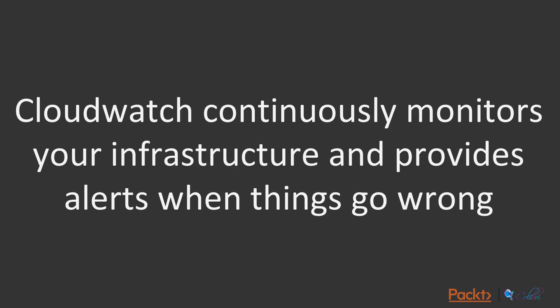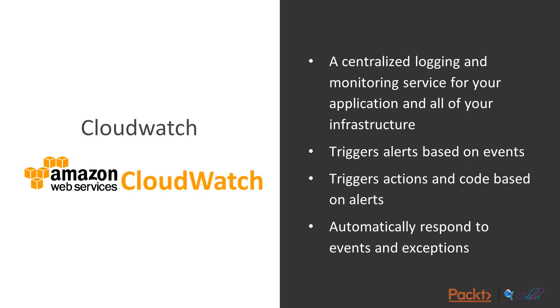CloudWatch is continuously monitoring your infrastructure and providing alerts when things go wrong. If the hardware fails that your underlying instance is running on, you'll receive an alert. If an availability zone fails and the whole data centre is knocked out, you'll also be alerted. Because CloudWatch runs at the regional level, it can provide notifications about availability zone failure. So what is CloudWatch? It's a centralised logging and monitoring service for your application and all of your infrastructure, and it triggers alerts based on events. You can trigger actions and code based on those alerts.